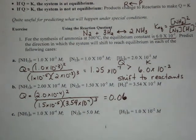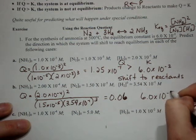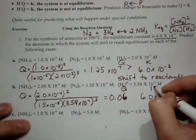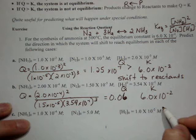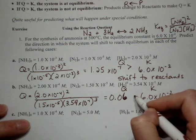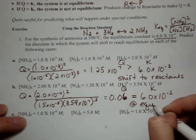Okay, and the answer to that part is .06. So again, if we compare with K, Q and K, .06 is the same thing as 6 times 10 to the negative two. So in this case, Q and K are equal. So this system is at equilibrium.